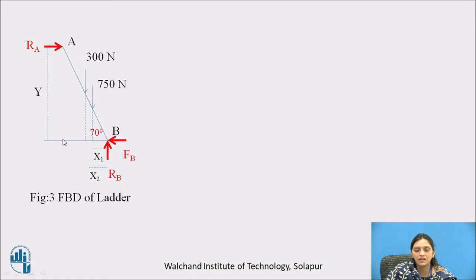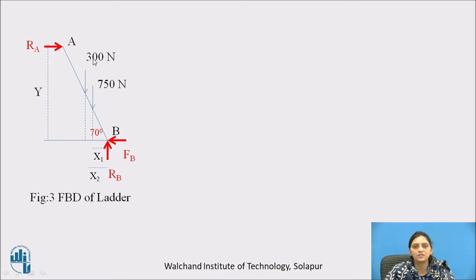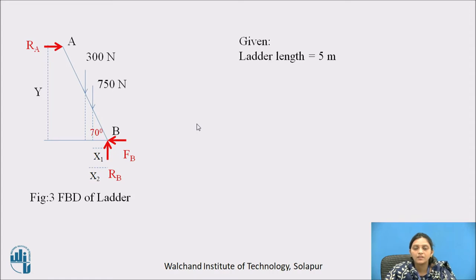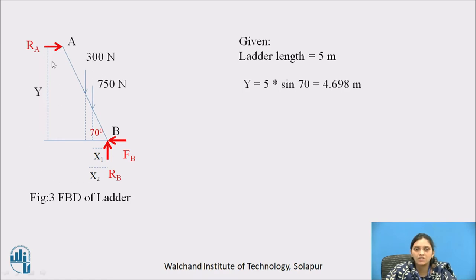Total forces acting on the ladder: reaction Ra at A, 300 Newton self-weight, 750 Newton person weight, and reaction RB and frictional force FB at point B. The ladder length is 5 meters. This is a non-concurrent force system, so we must use the moment equation — force into distance. We take B as the reference point.